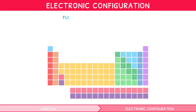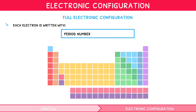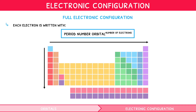To denote the full electronic configuration of an atom, each electron is written with the period number it is found within, followed by the orbital in which it is contained, raised to the power of the number of electrons in that orbital. This sounds complex, but it is quite simple by learning to read the periodic table like a book — left to right, top to bottom. Let's look at two examples.